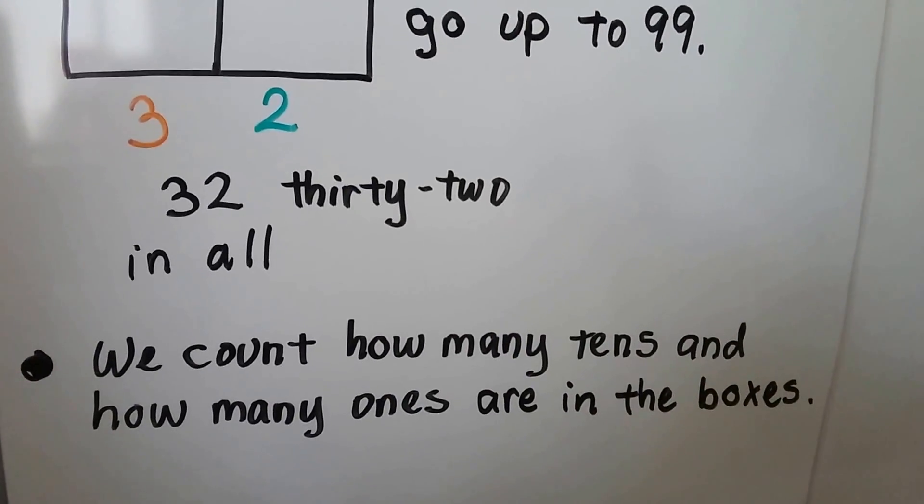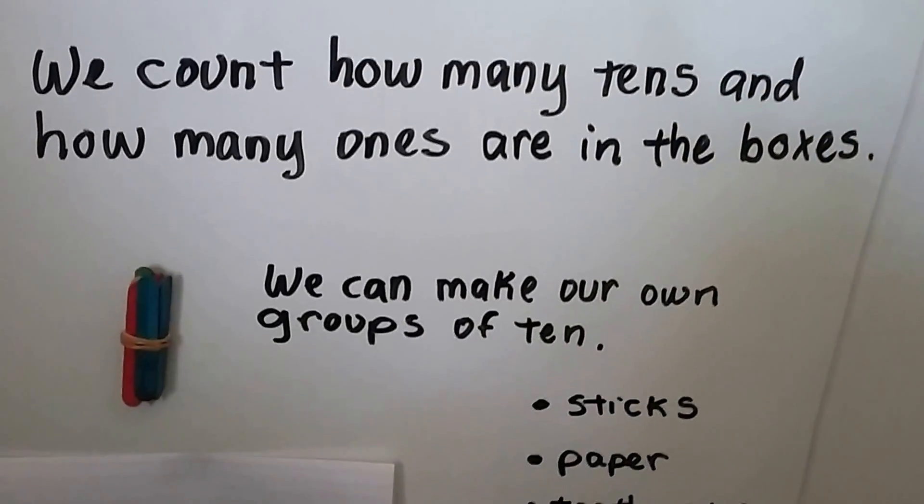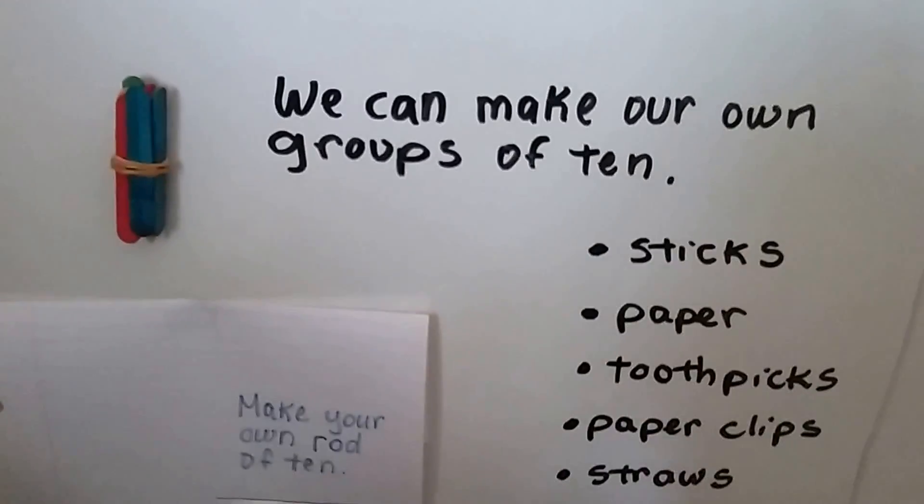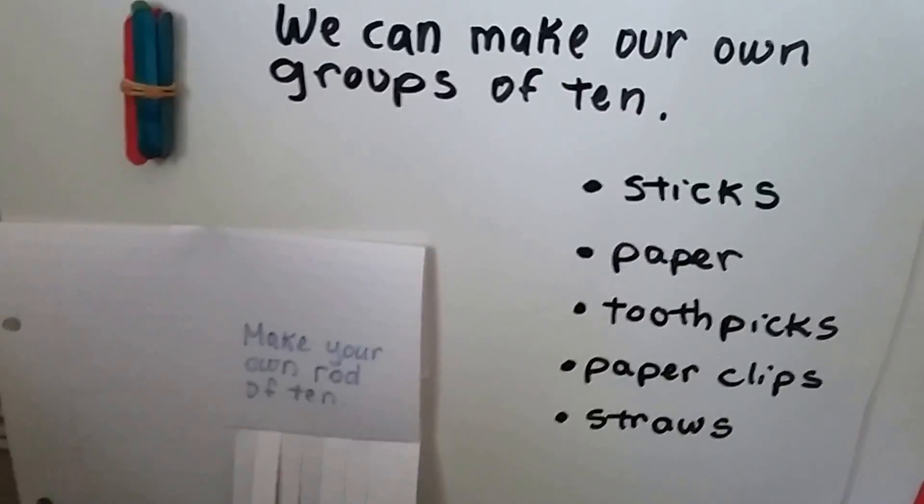We count how many tens and how many ones are in the boxes, and we can make our own groups of ten. We can use popsicle sticks, paper, toothpicks, paper clips, or straws.